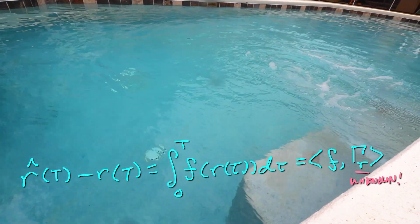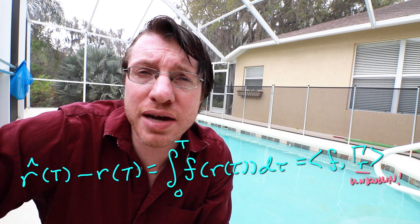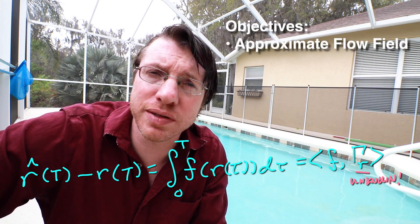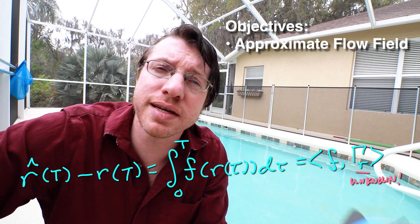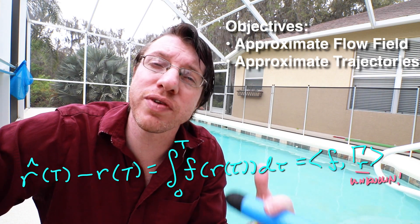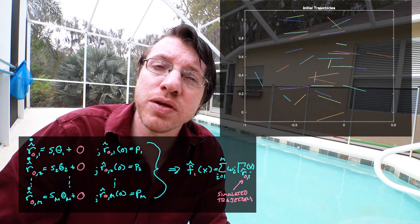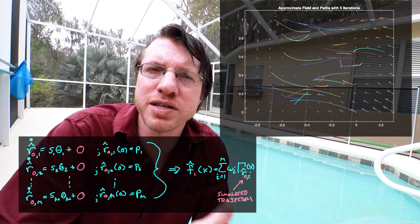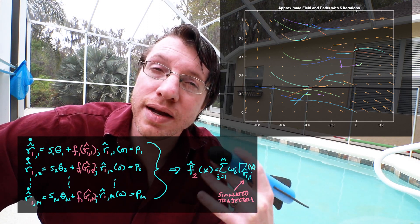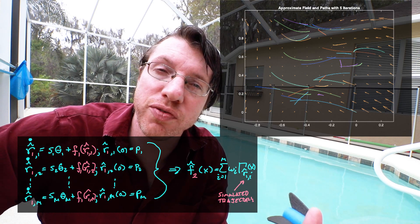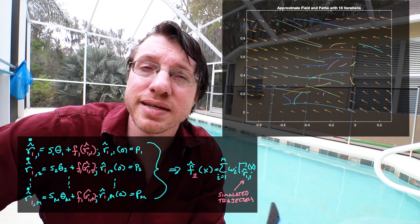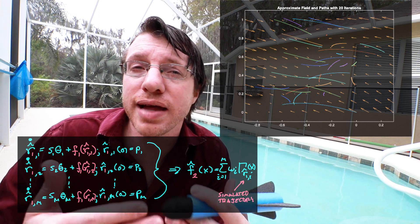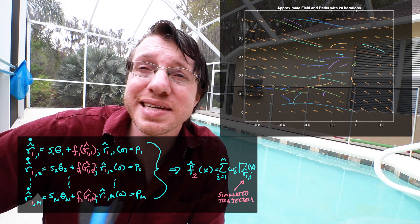There is one problem that makes this different from the dynamical systems case: we don't actually know what the true trajectory path was. This becomes a two-pronged effort. We want to approximate the flow field, but we can't get a good approximation without knowing the actual trajectory. So we set up an iteration scheme: start with a zero flow field and use nominal trajectories for the occupation kernels, get an approximation of the flow field, then make a new guess for the trajectory using that approximation, and feed that back to get new expected trajectories. We stop when the expected trajectory endpoints match the actual trajectory endpoints — which is the only data we really have.